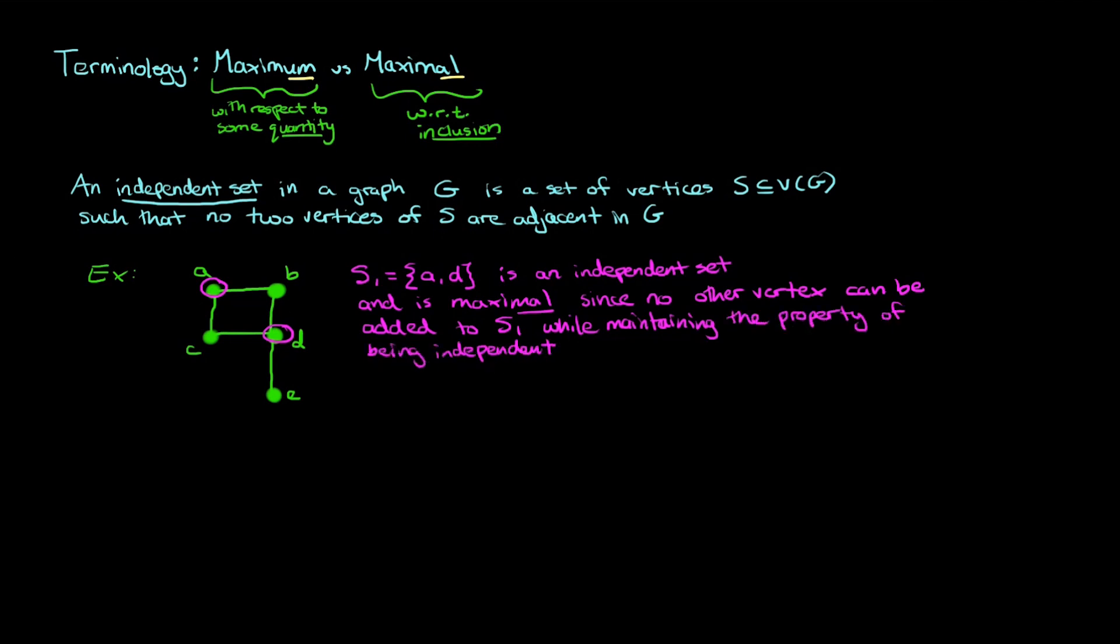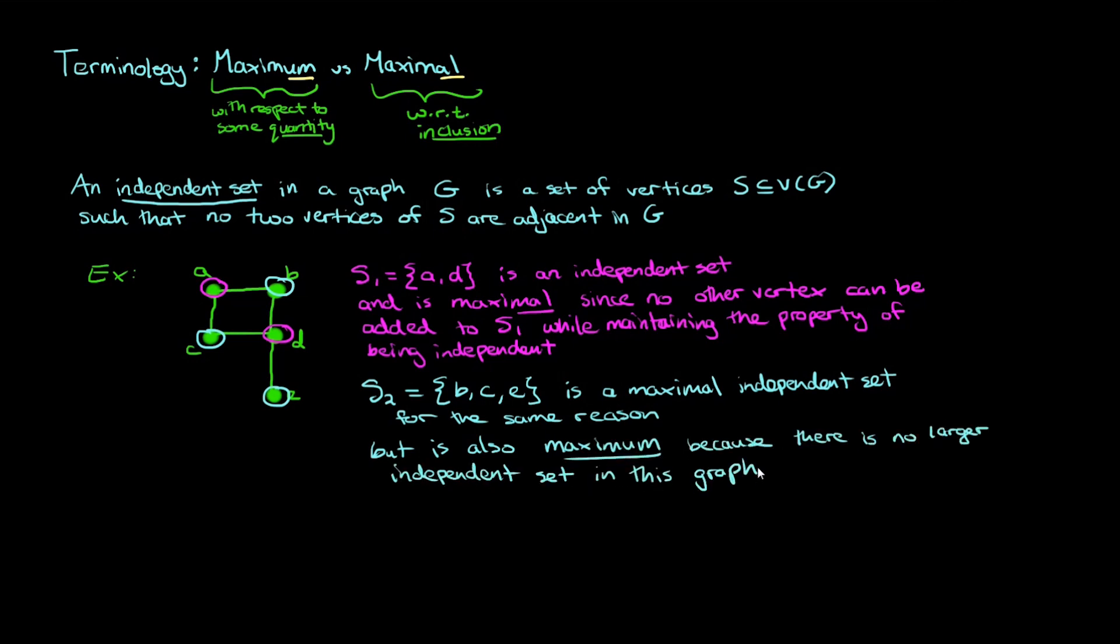But now if we take a look at a different set, S2, which will contain vertices B, C and E, we'll see that this is also a maximal independent set for the same reason, but it's maximum because there is no larger independent set in this graph. So to recap, S1 is maximal but not maximum, whereas S2 is both maximal and maximum. Also notice that if we take set S3 to just have vertices B and C, it is independent but it's not maximal and it's not maximum.